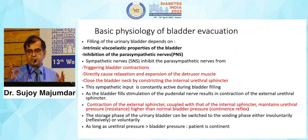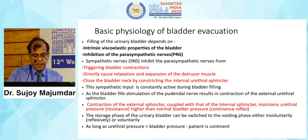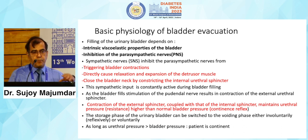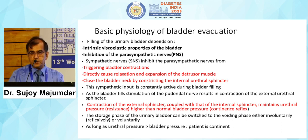In a stress situation, the sympathetic nervous system is dominant. We want to prevent incontinence, so the sympathetic system goes into overdrive to prevent bladder evacuation. The sympathetic system triggers bladder contractions, causes relaxation and expansion of the detrusor muscle so the bladder can accommodate more urine, and closes the bladder neck by constricting the internal urethral sphincter. As the bladder fills, the pudendal nerve increasingly stimulates the external urethral sphincter, raising its pressure. The urethral sphincter pressure must remain higher than bladder pressure to maintain continence.